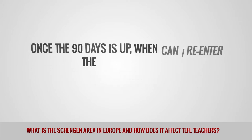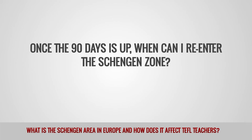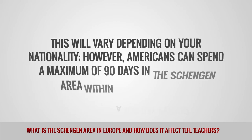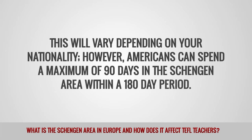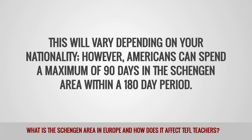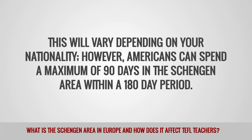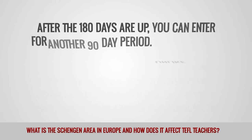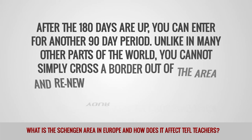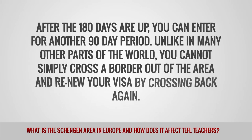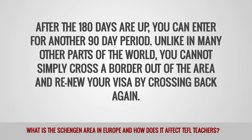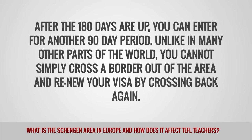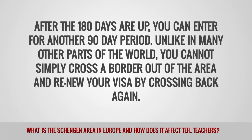Once the 90 days is up, when can I re-enter the Schengen Zone? This will vary depending on your nationality. However, Americans can spend a maximum of 90 days in the Schengen Area within a 180-day period. After the 180 days are up, you can enter for another 90-day period. Unlike in many other parts of the world, you cannot simply cross a border out of the area and renew your visa by crossing back again.